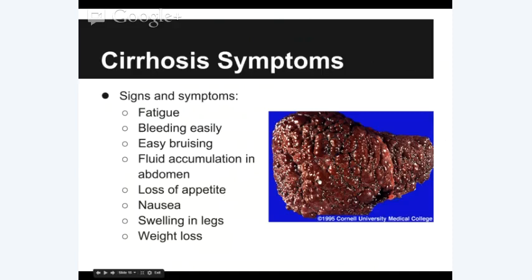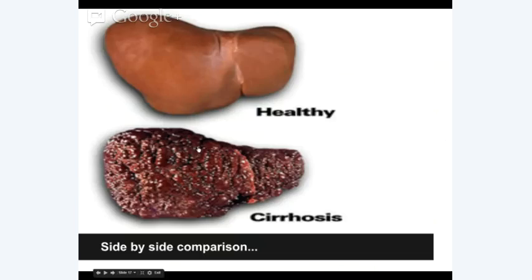Symptoms of cirrhosis include: fatigue, easy bleeding (because the liver helps with blood clotting), easy bruising, fluid accumulation in the abdomen (because the liver can't process it), loss of appetite, nausea, swelling in the legs, and weight loss. This is what a healthy liver should look like — a nice pink organ — compared side-by-side with a liver that has cirrhosis, which is quite different and rather alarming.